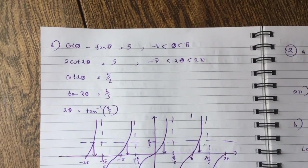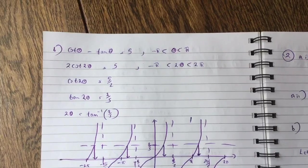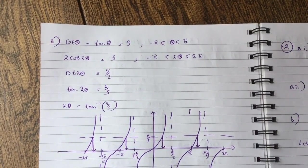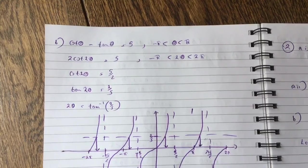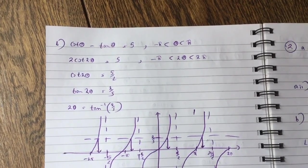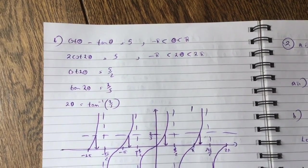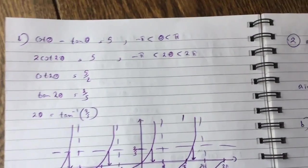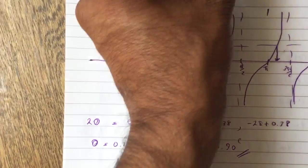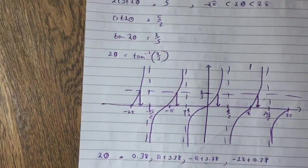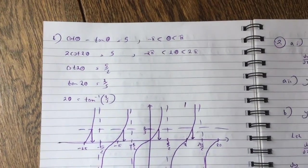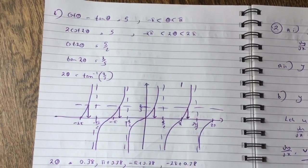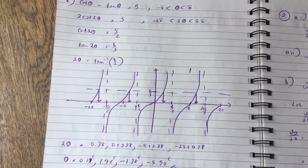Now part b is to solve the equation cot θ minus tan θ = 5. So obviously we've proven that 2 cot 2θ equals 5 from part a. Also note the limit: θ is between minus π and π, so 2θ will be between minus 2π and plus 2π. So cot 2θ = 5/2, which means tan 2θ = 2/5.